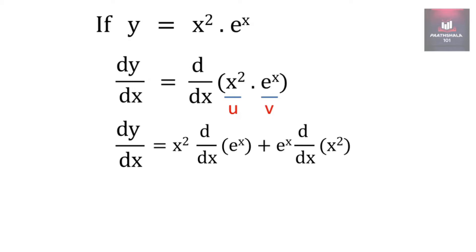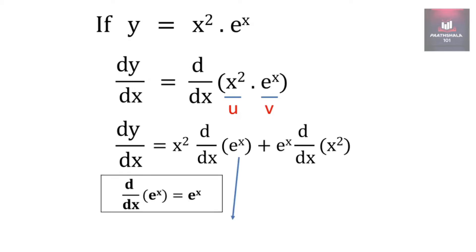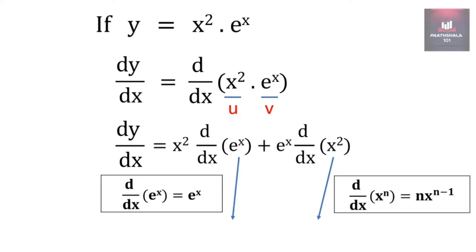Now the derivative of e raised to x is e raised to x only, and for the derivative of x square we use the formula: derivative of x raised to n is n times x raised to n minus 1. So the final answer becomes x square into e raised to x plus e raised to x into 2x, which you can simplify by taking e raised to x common.